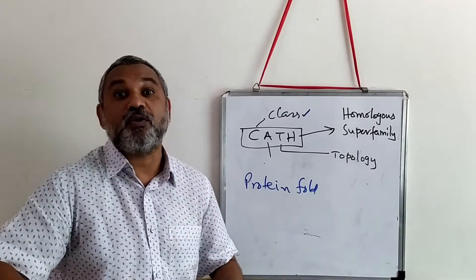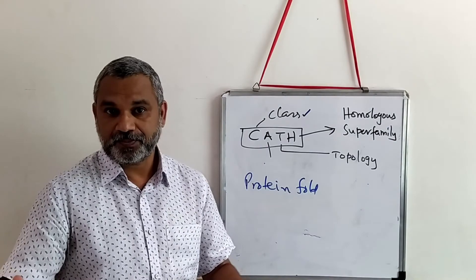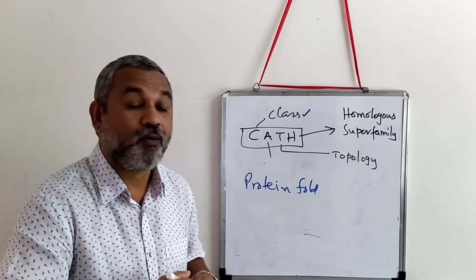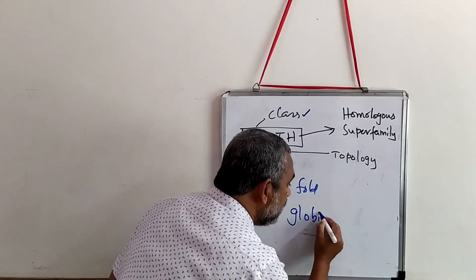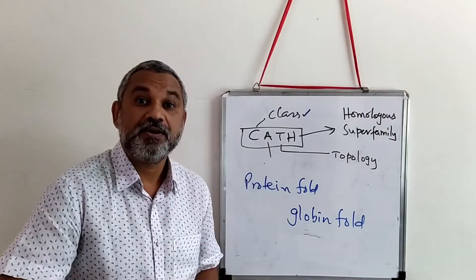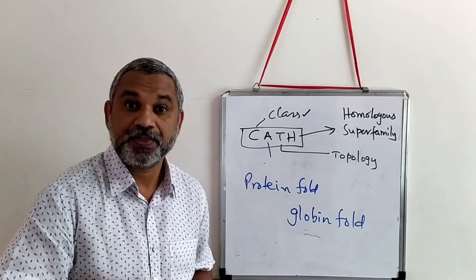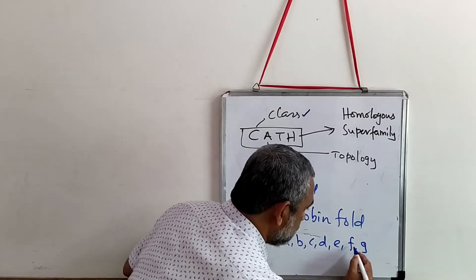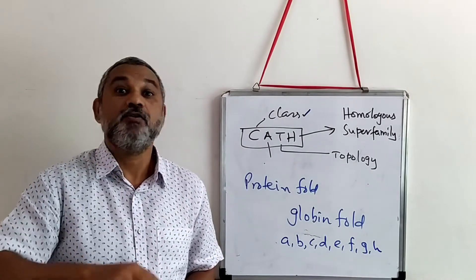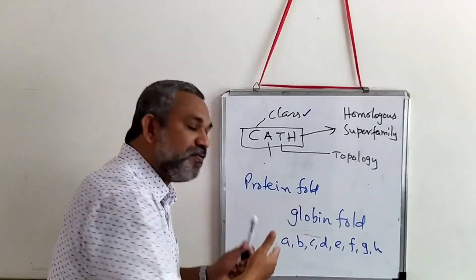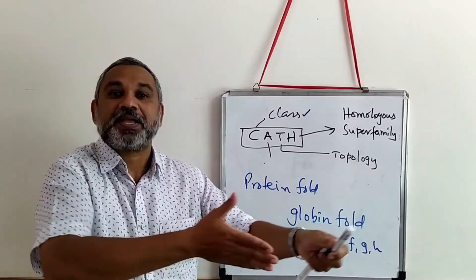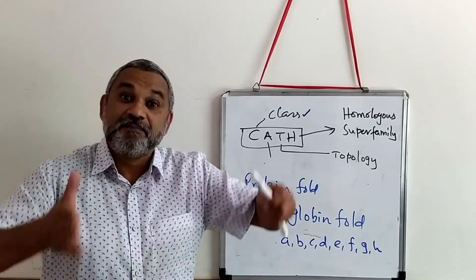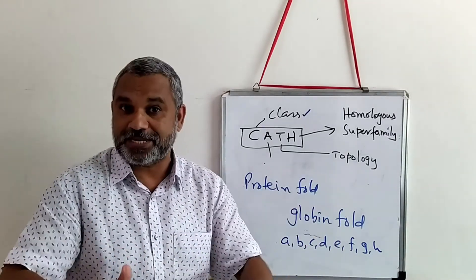One classic example of a protein fold that is a topology is the globin fold, which we have learned. The globin fold is made of alpha helical structures — A, B, C, D, E, F, G, and H — eight alpha helical structures form the globin fold. And you will find the same globin fold in myoglobin, in hemoglobin, in leghemoglobin, and in all other hemoglobins in varieties of species — the same fold is present.